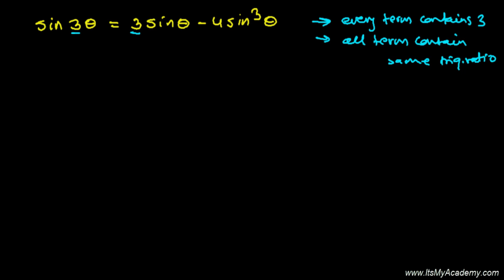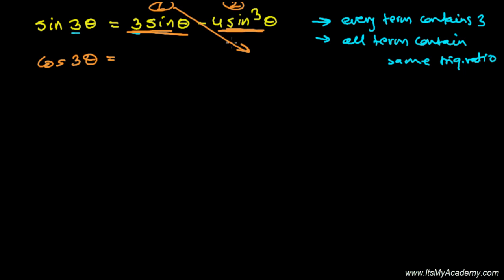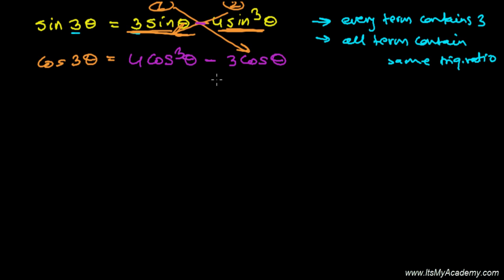Now, if you want to write the formula for cosine 3 theta, it's very easy. Just replace the first term with the second term and the second term with the first term from the sine 3 theta formula — just exchange them. So 4 sine cube theta becomes 4 cos cube theta, and then minus, and 3 sine theta becomes 3 cos theta. Just replace the first term by the second term and sine by cosine — that's it.